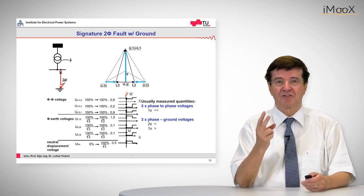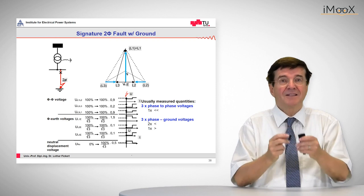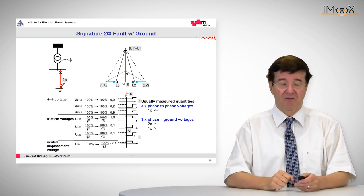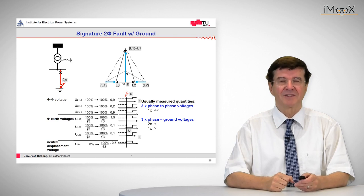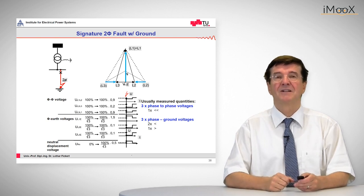And when it comes to the phase-to-ground voltages, we can see that two phases collapse versus ground and, amazingly enough, the third voltage goes up. So this is very characteristic for this type of fault where ground is involved.